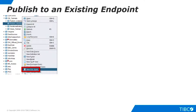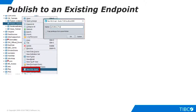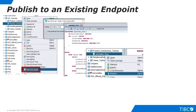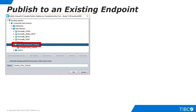Let's publish a second procedure in order to show how to add a web service operation to an existing endpoint. Create a new SQL script in a folder of your choice, give the script a name, and create any logic you like. I have simply pasted in the script from our previous example and changed the name of the procedure. Right-click the new procedure and select Publish. Now, instead of creating a new endpoint, simply select the one we created earlier.